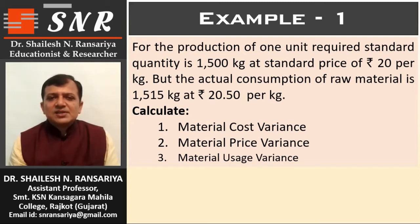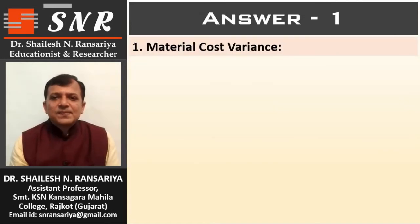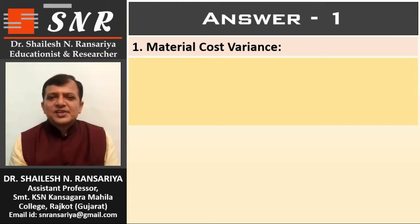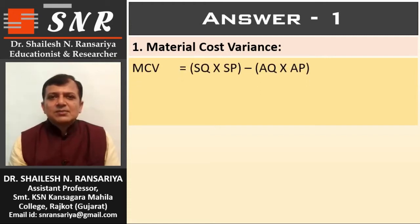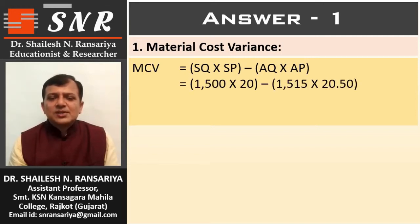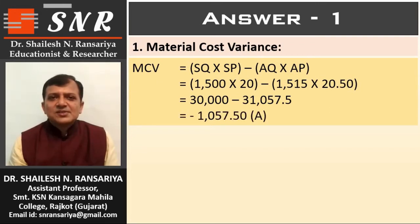First, we will calculate material cost variance. In this example, SC is not available. So we can calculate MCV by SQ × SP minus AQ × AP. So, SQ 1500 × 20 minus AQ 1515 × 20.5. So, 30,000 minus 31,057.5. The variance is minus 1057.5 — it is minus, meaning adverse or unfavorable.